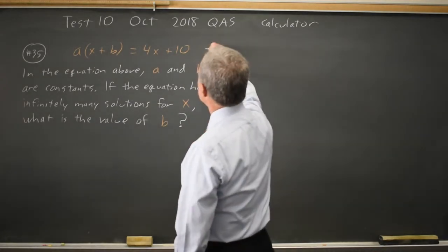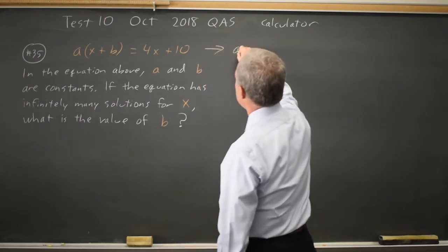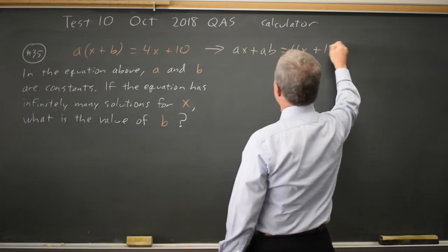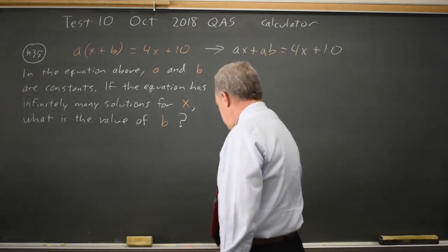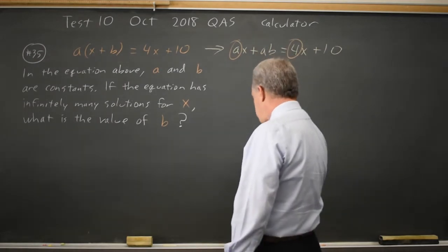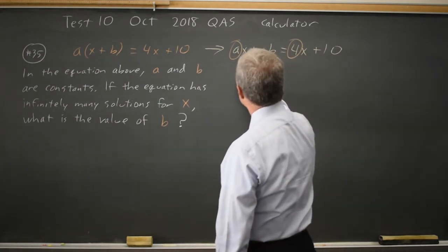So what I know here is when I distribute, I get ax plus ab equals 4x plus 10. Since the slopes are the same to have infinitely many solutions or no solutions, I know a equals 4.